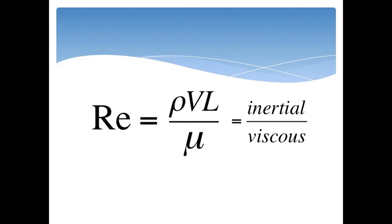Reynolds number is equal to the density times the velocity times the characteristic length over the viscosity of the fluid. Its significance is the ratio of inertial forces to viscous forces on a fluid element.